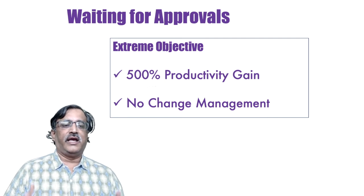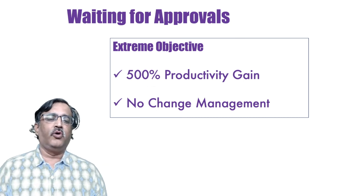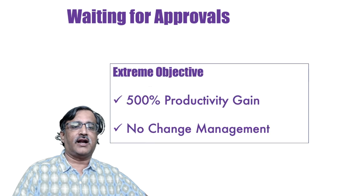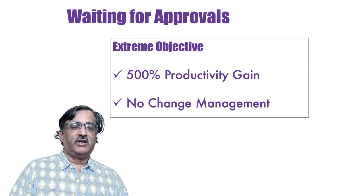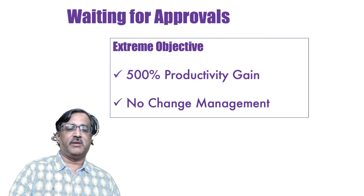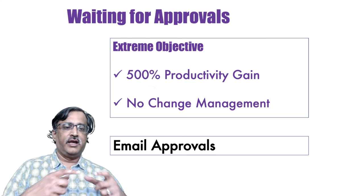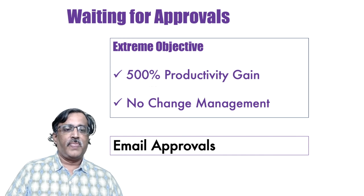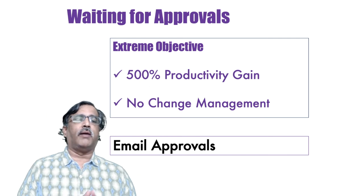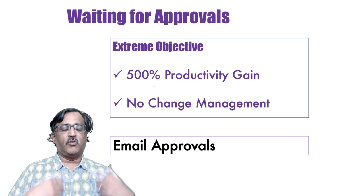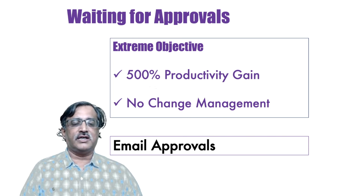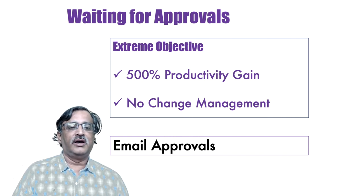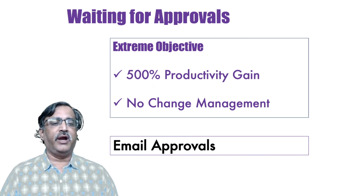If they were traveling somewhere, they would have to find an internet connection, boot up the laptop, and do it — which was quite cumbersome as they were all traveling extensively. We also had a goal of 500% productivity gain with no change management. So one of our teammates came up with a brilliant idea of an email approval tool. We created a simple email approval system: any approval request would be sent to this software, which would send a link to the user, and they simply had to reply 'approved' or 'rejected' with the transaction details. Whatever they replied, we would post it back into the original transaction system. This made management stakeholders' jobs dramatically easier because they could do approvals from their BlackBerries or later their smartphones.